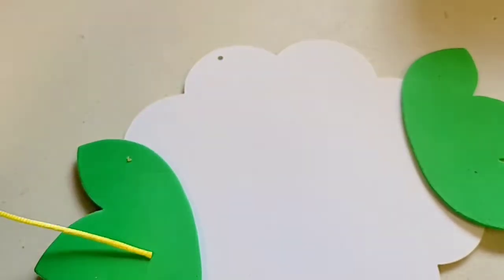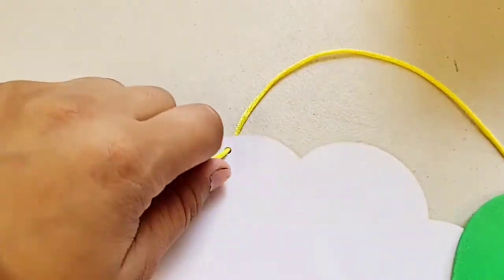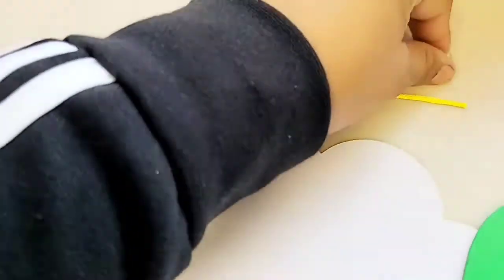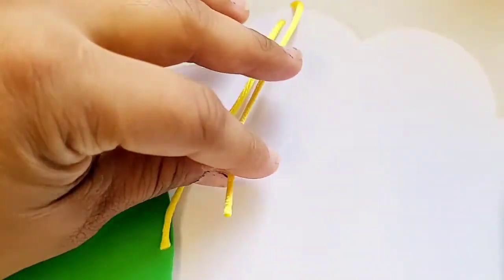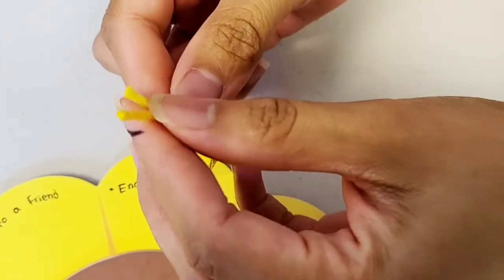Now use the yellow string and put it on the small hole to make a knot. Now tie the ends of the string to make a knot.